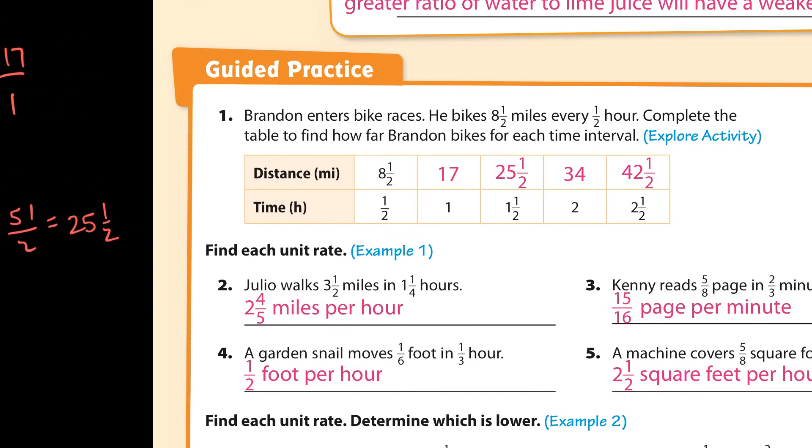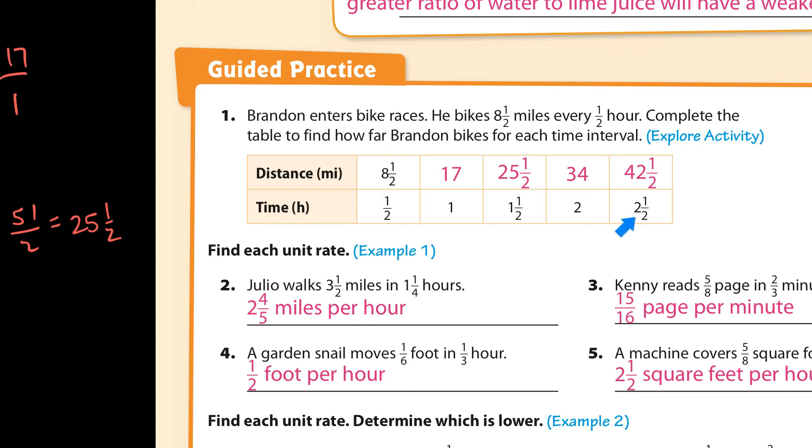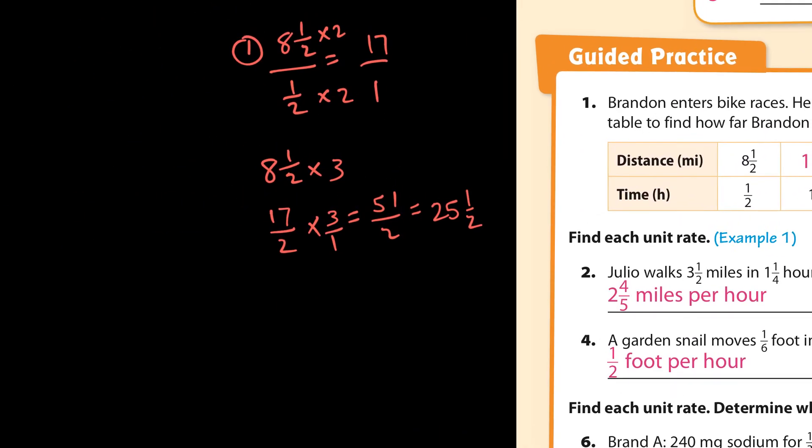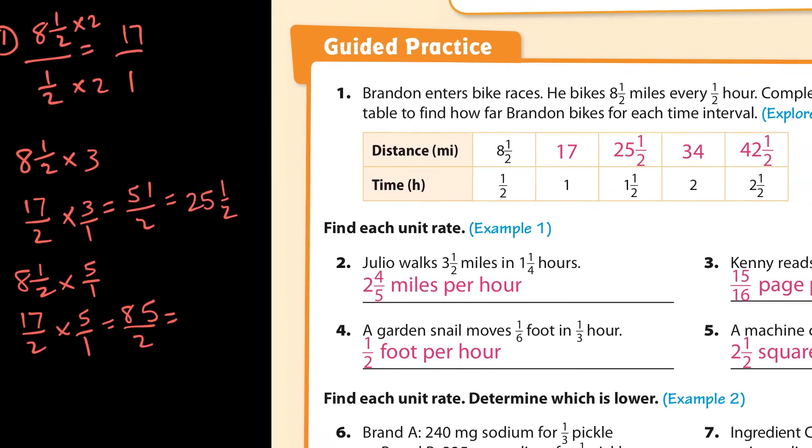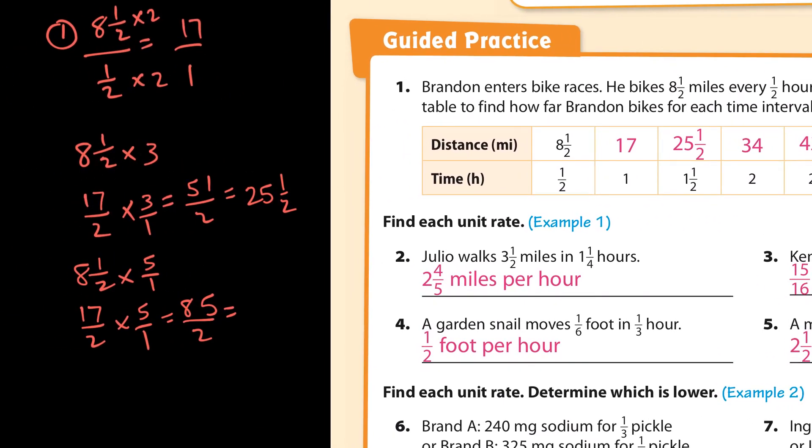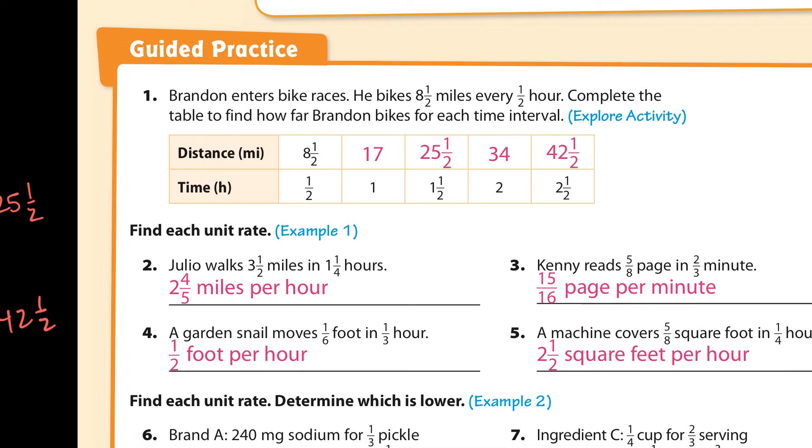And then what do we have here? 2 and a half. Let's see, how can we get 2 and a half? Well, 1 half times 5 is 2 and a half, so I'd have to multiply the 8 and a half times 5. So let's see, 8 and 1 half times 5 over 1. 8 and a half is 17 halves times 5 over 1, that's 85 over 2, which is 42 and a half. So that's equal to 42 and 1 half, and that's how we get this last number right there.